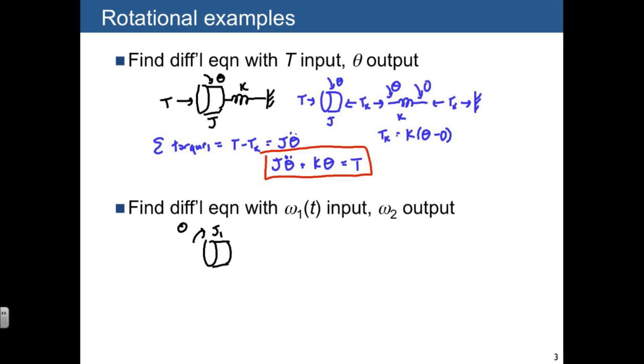which we'll call omega 1, with a drag cup damper between them.